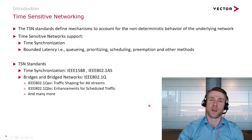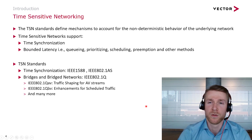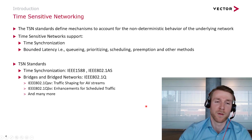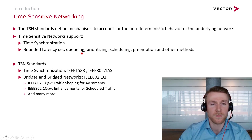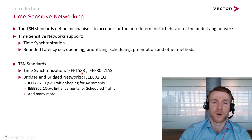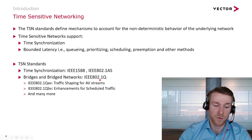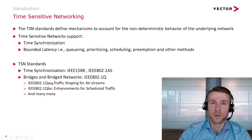The time-sensitive networking standards define mechanisms to account for the non-deterministic behavior of the underlying network. Within the standards and technologies, I'd like to break things into two areas: time synchronization, and mechanisms for bounded latency such as queuing or shaping. From a long list of standards, I'd like to highlight the following: time synchronization is specified in IEEE 1588 and IEEE 802.1AS, which define mechanisms to synchronize time so all network elements share a common time base. Another group is IEEE 802.1Q, which defines bridges and bridge networks. Different shapers are defined in sub-standards such as QAV or QBV — I won't cover them all, but I mention them as we will discuss shapers in this presentation.